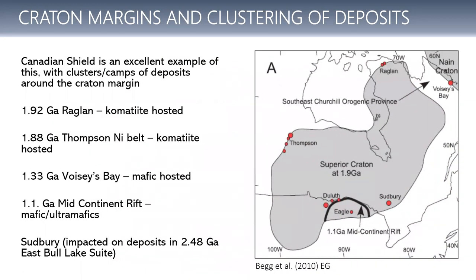That's been known for a while. This is what I'm saying is a sort of classic conventional style. So we've got the Superior Craton as a great one. We've got komatiites at Raglan, Thomson, a little bit of time there before Voisey's Bay pops up on the edge of the North Atlantic Craton. And then we've got major plume-related activity in the Mid-Continent Rift.